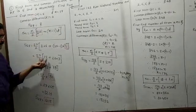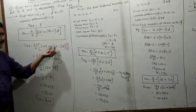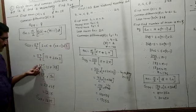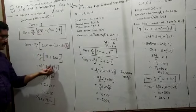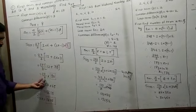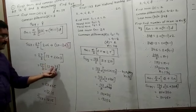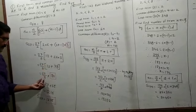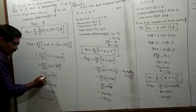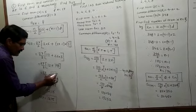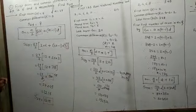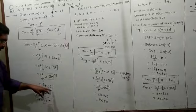Then, 27 minus 1 is equal to 26, multiplied by 3 equals 78. Then, 12 plus 78 is equal to 90. So we have 27 upon 2 multiplied by 90. Now, 2 and 90: 2 ones are 2, and 45 twos are 90. So this simplifies to 27 multiplied by 45.